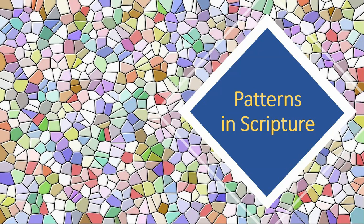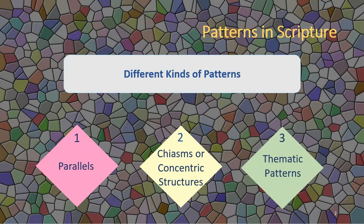Hello, everyone. My name is Beth Mahaffey with Highway to Holiness. Today we're going to be talking about patterns in Scripture. There are basically three different kinds of patterns that we can find in Scripture: the first one are parallels, next are chiasms or concentric structures, and what I call thematic patterns.